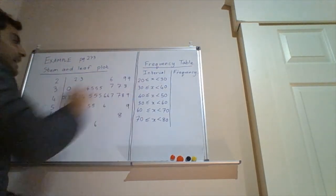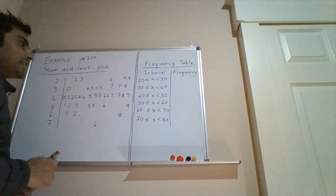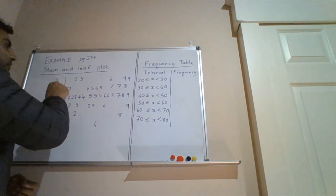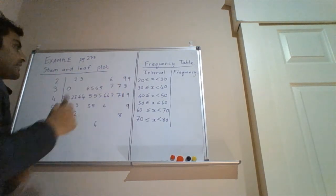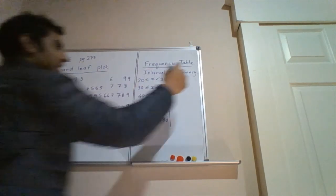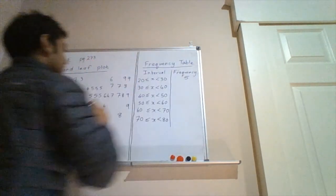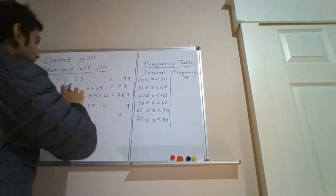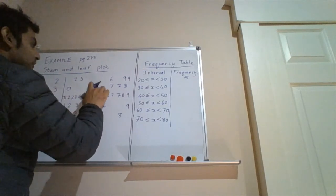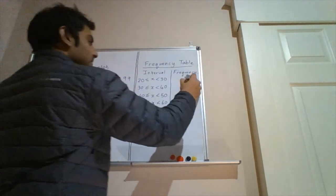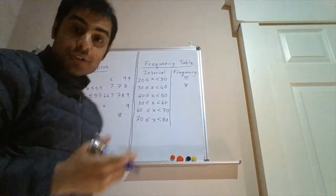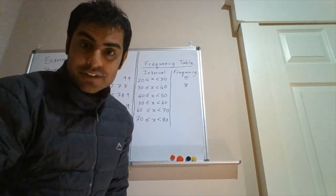So let's just count these frequencies. So from 20 to 29, there's 1, 2, 3, 4, 5. And for the next one, there's 1, 2, 3, 4, 5, 6, 7, 8. And I'll just pause the video and fill in the rest.